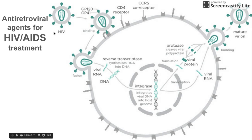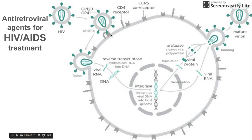We start with the HIV virus here that binds to the cell. This is a T cell, part of the immune system. It binds to a receptor called a CD4 receptor, so this is a CD4 positive T cell. And oftentimes it binds with a co-receptor called the CCR5 co-receptor. The two proteins on the HIV virus that help bind to the T cell are the GP120 and the GP41 proteins. GP41 anchors it to that envelope and the GP120 is the outer protein that helps it stick to the CD4 receptor, as you see here.